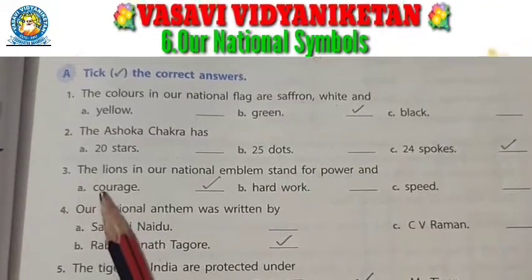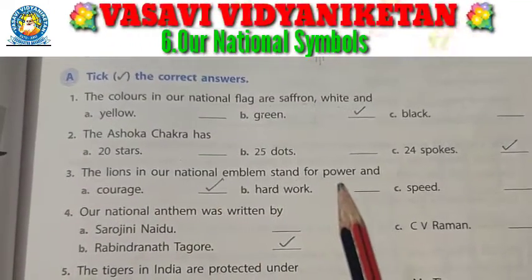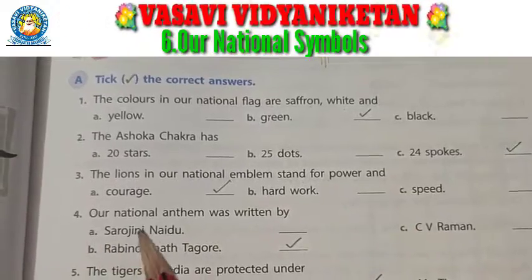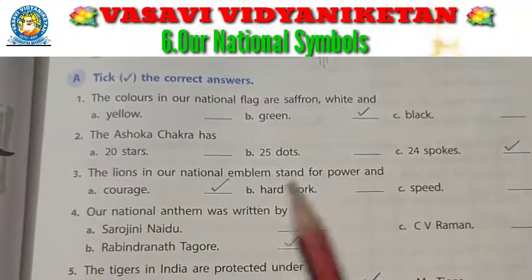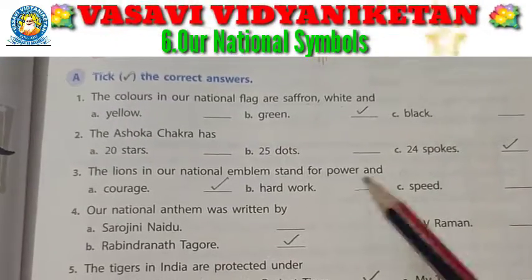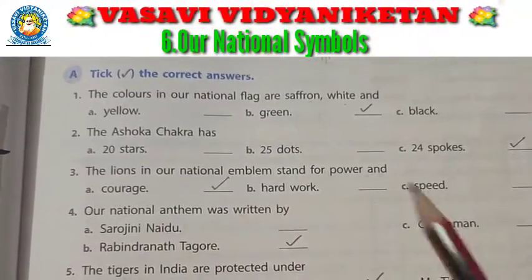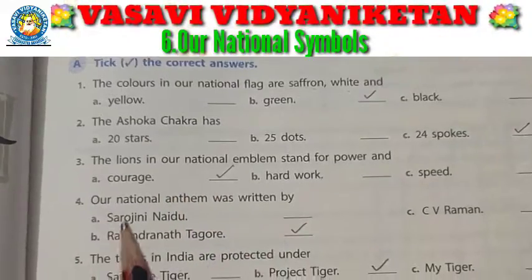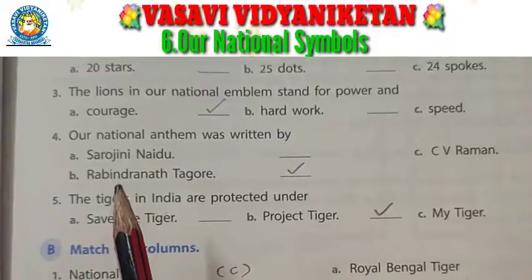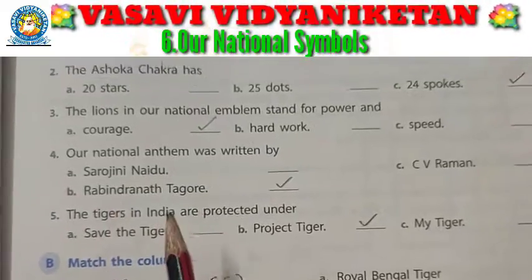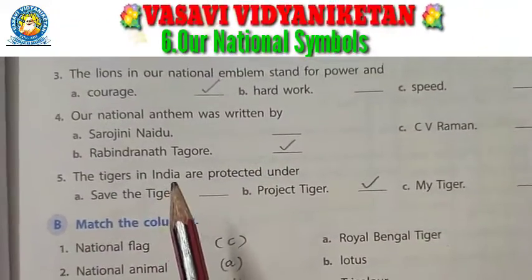Next: the lions in our national emblem stand for power and — the national emblem has lions representing power and courage. The answer is courage. Next: our national anthem was written by — the national anthem was written by Rabindranath Tagore.